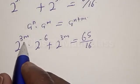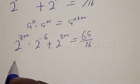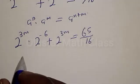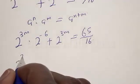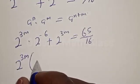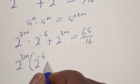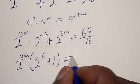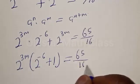Now 2 raised to power 3m is common in both terms. We can factor 2 raised to power 3m out. Then we have 2 raised to power 3m, open bracket, 2 raised to power minus 6 plus 1, is equal to 65 divided by 16.